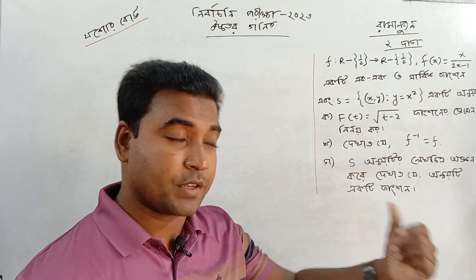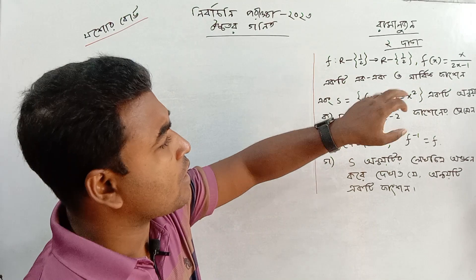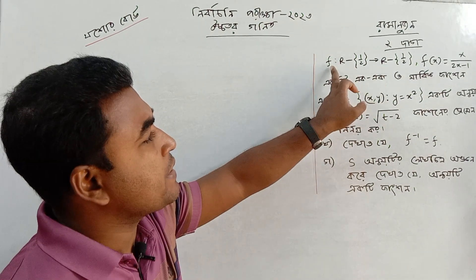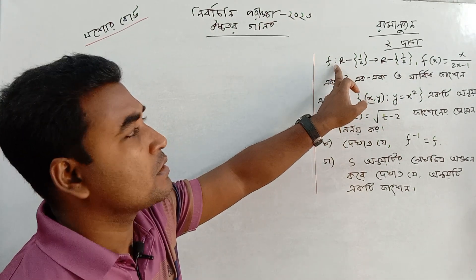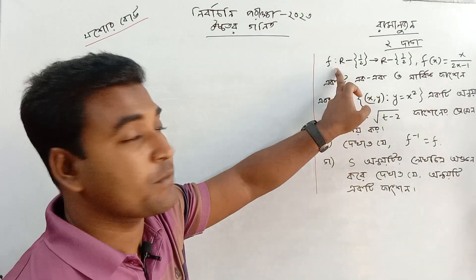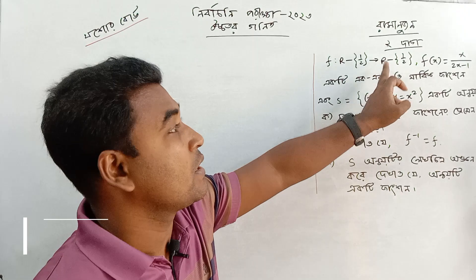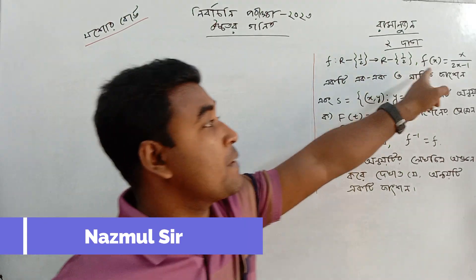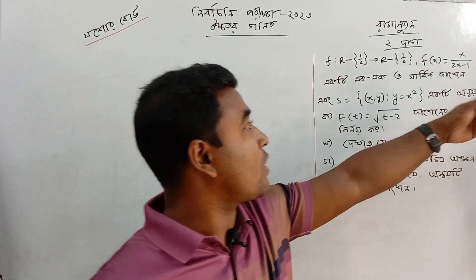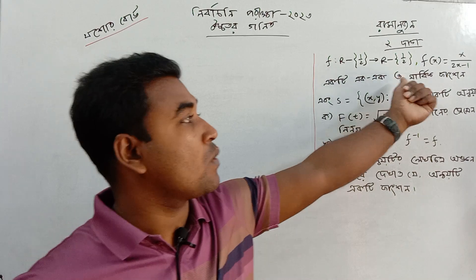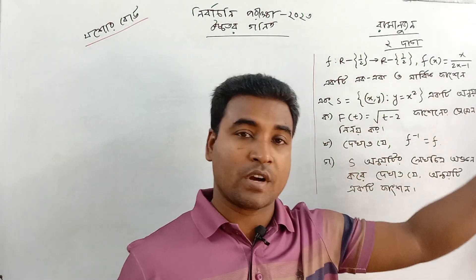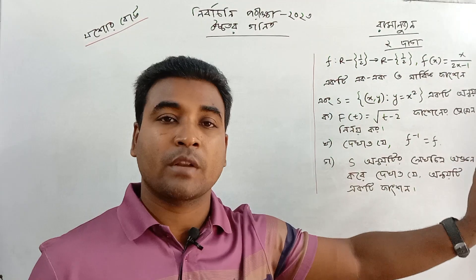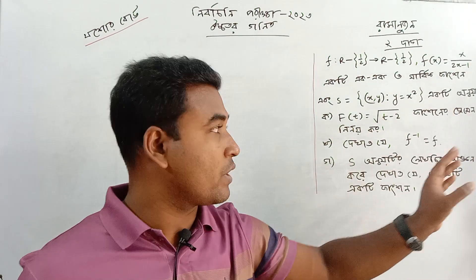f is a mapping from R to R. f is equal to x divided by 2x minus 1, which is a one-to-one and onto function.